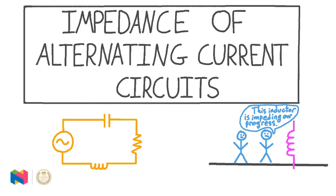In this lesson, we are going to learn about impedance and reactance, which generalize the concept of resistance for resistors to capacitors and inductors in alternating current circuits.